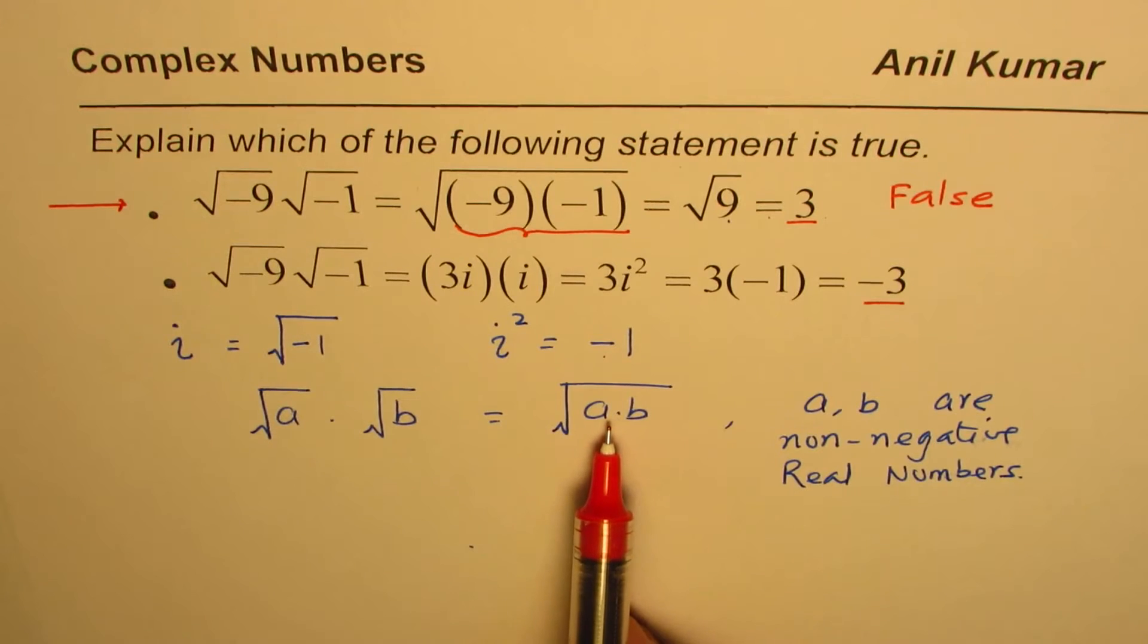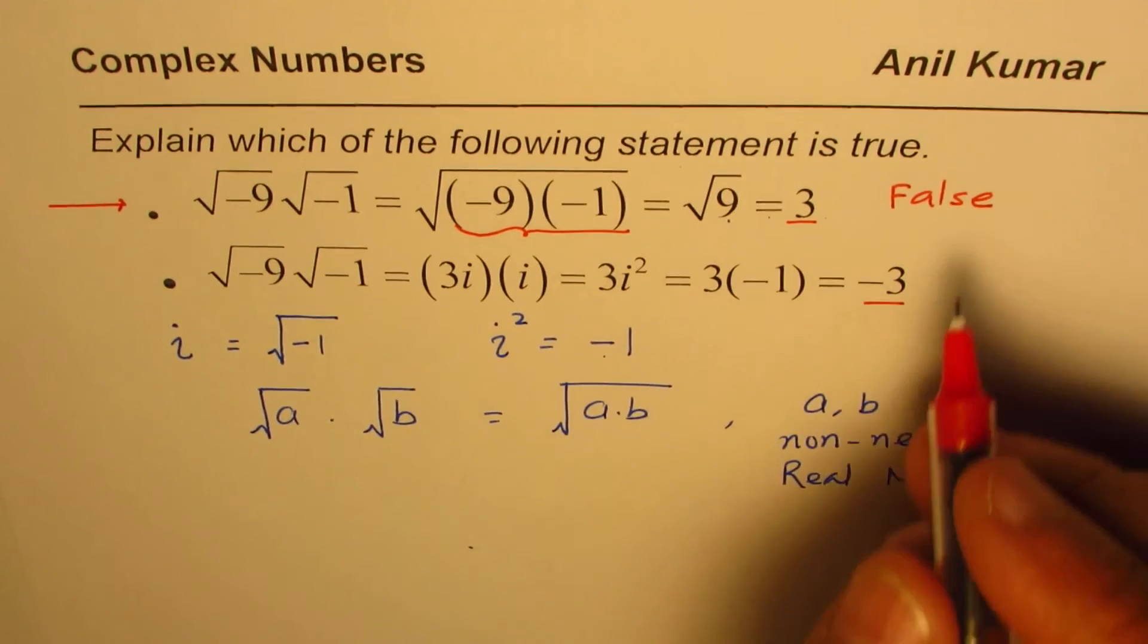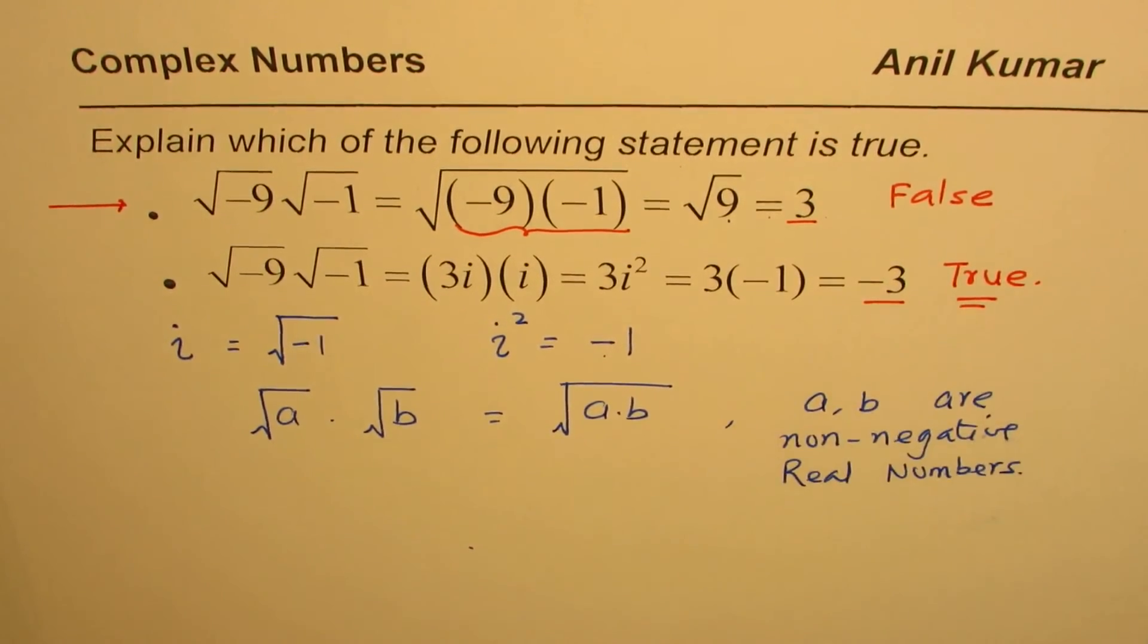So they could be zero or positive, but if they are negative then we cannot apply this property. So the first statement is false and the second one is true. So that is how we can reason out which statement is true.